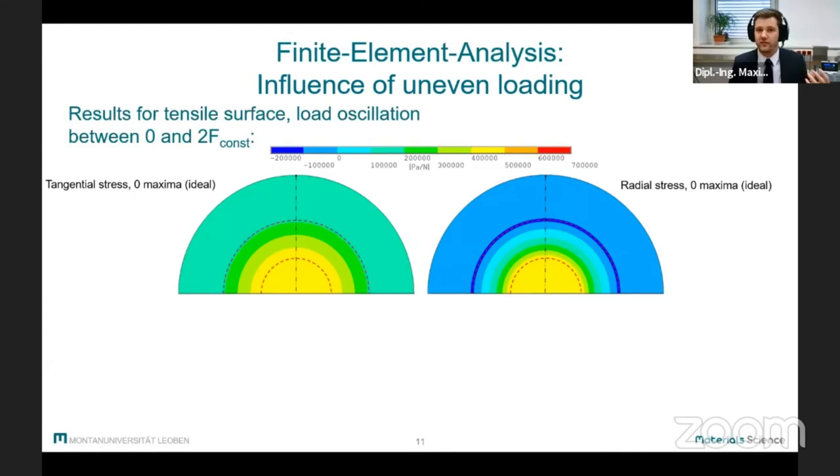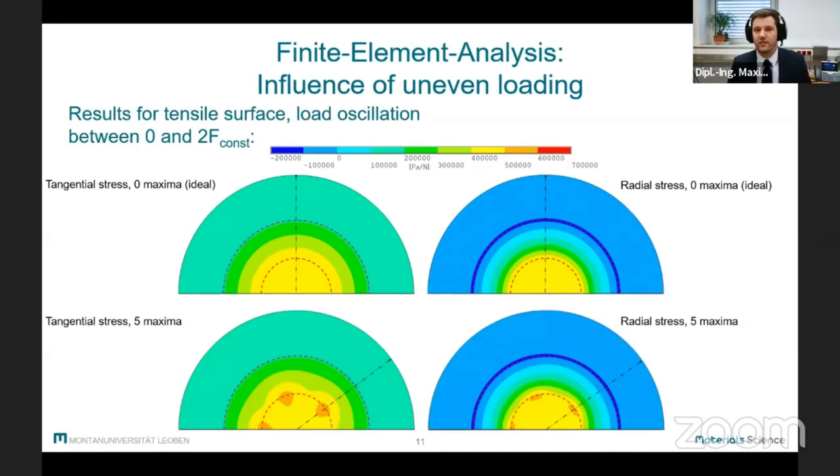These images show the stress field for the ideal case, and this is the result for five contacts. I think it's pretty clear to see that zones of higher stress at the simulated contact regions appear. So again, we'll take a closer look at the stress of the tensile surface, but this time through the zones of increased stress.